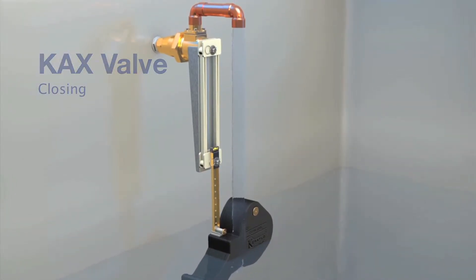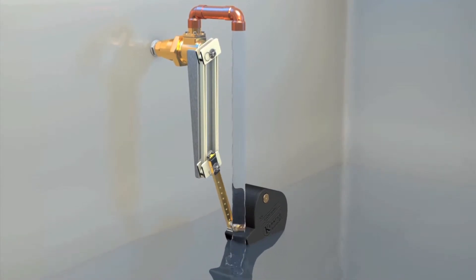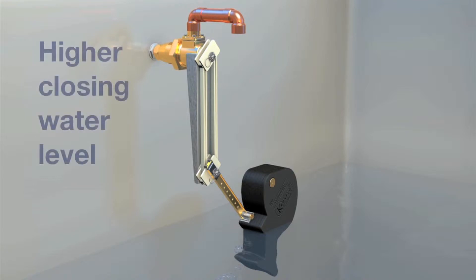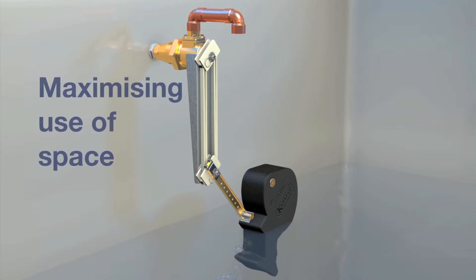The difference is that the float is mounted on a longer, remote-acting drop arm and is therefore further from the valve, which allows for a higher closing water level in the tank, maximizing the use of space and the tank's actual capacity.